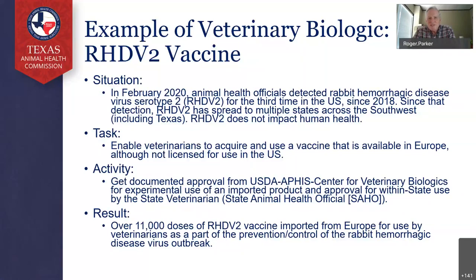That was a situation where, looking at the activity, we needed to get documented approval from APHIS and the Center for Veterinary Biologics to bring in these imported products that were for experimental use. Working with APHIS, import brokers, and the state veterinarian, over 11,000 doses were brought in last year for use by veterinarians. When I say 11,000 doses — there being one to two million rabbits in the state of Texas — this is just a partial response thus far.